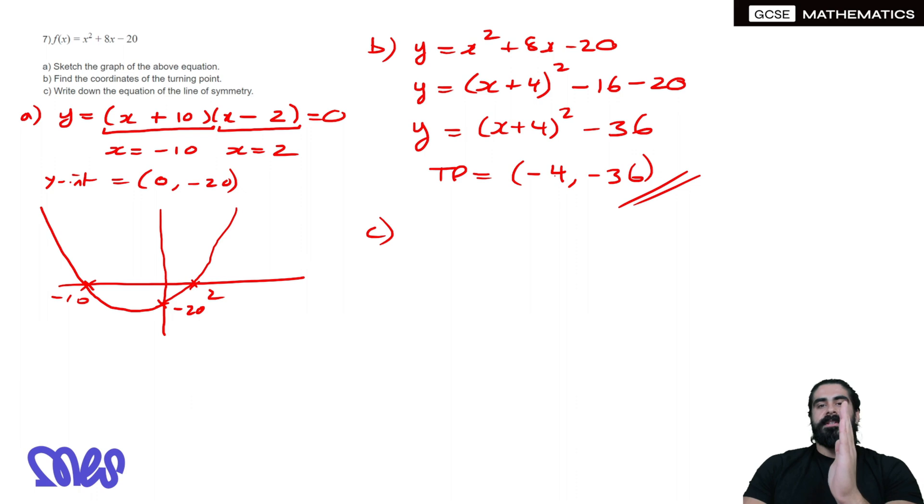Write down the equation of the line of symmetry. We look at the turning point, what's this x value—that will tell you what the vertical line is. We'll set x = -4.